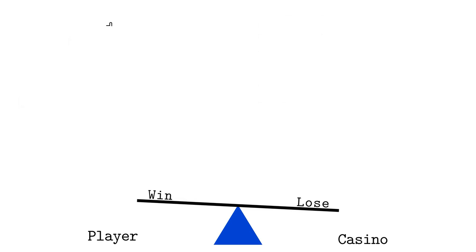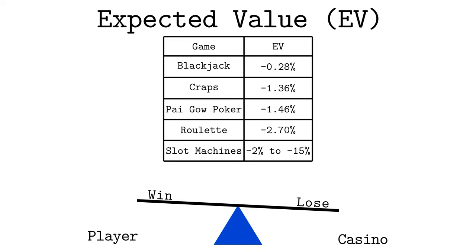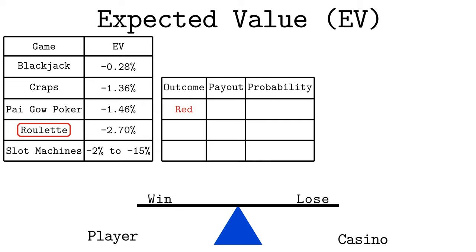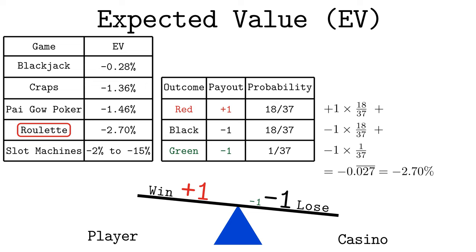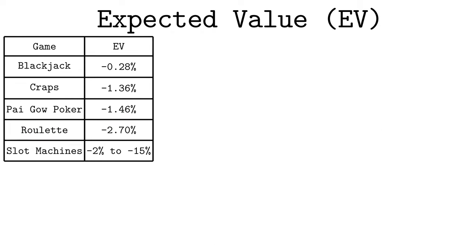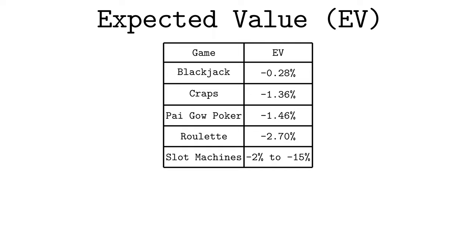We can quantify how much the player is expected to win using something called the expected value, or EV for short. Casino games always have negative expected values because they need to gradually take the player's money so the casino stays in business. A typical casino game has an expected value between a negative quarter of a percent and negative five percent, depending on the rules chosen by the casino. Suppose a roulette player bets one dollar on red. If they are right, they win an additional dollar. However, if black or green comes up, they lose their dollar wager. There is an 18 and 37 chance of seeing a red, an 18 and 37 chance of seeing a black, and a 1 and 37 chance of seeing the green zero. If we multiply the payouts by the probabilities and add them up, we get the negative 2.7 percent expected value seen in this table. A higher EV means the game is better for the player, but any negative EV means players will lose money in the long run. A game with a slightly negative EV just means players lose their money more slowly.